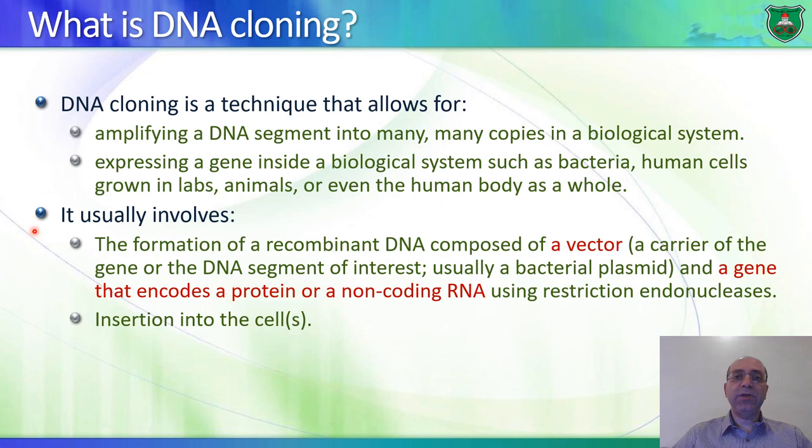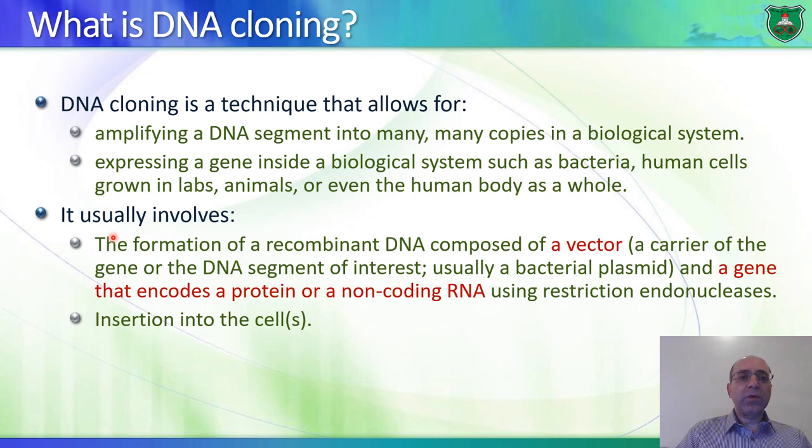This DNA fragment can be a gene — a gene that produces a protein. We can insert this gene into different types of cells and produce many copies of this gene, or we can express the gene itself into a protein inside the cell. This usually involves the formation of what we call recombinant DNA.